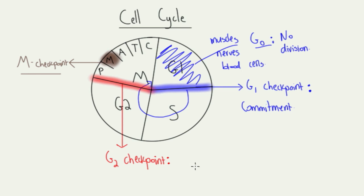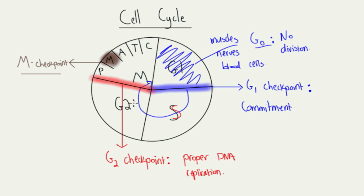Moving on to the G2 checkpoint — the purpose of this one is to ensure that there was proper DNA replication. Remember that DNA was replicated during S phase, so that's where DNA replication happens. The cell moves into G2 phase for growth and development, and then gets to the checkpoint. If the DNA wasn't copied properly, the G2 checkpoint's job is to make sure it does not continue on to the M phase. If the DNA is messed up, it'll try to repair it, and if it can't repair it, the cell needs to kill itself — a process called apoptosis — because you don't want a cell to divide if the DNA is messed up.